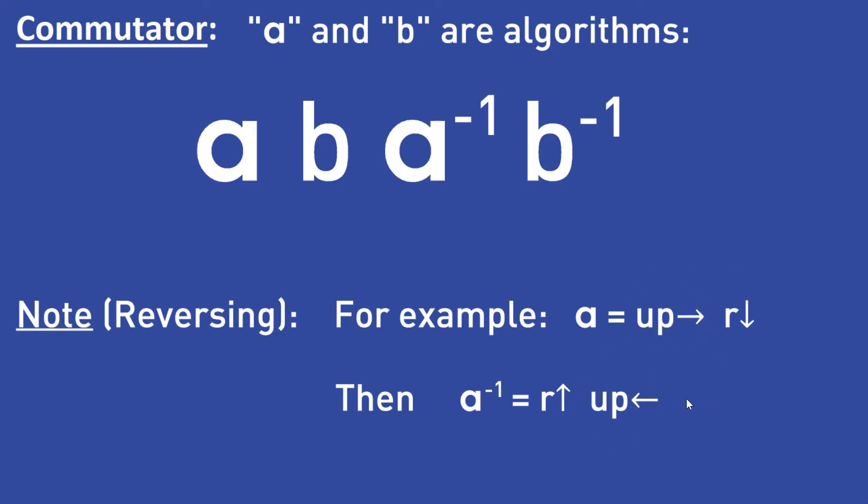I will now show you how to use commutators to perform a so-called 3-cycle on the cube. A 3-cycle is a permutation that permutes exactly 3 pieces of the cube. The rest of the cube is unchanged.